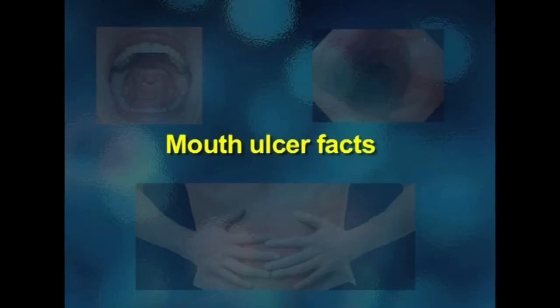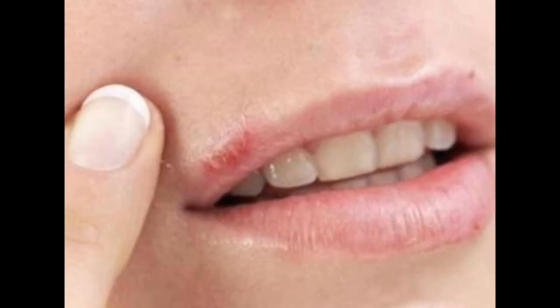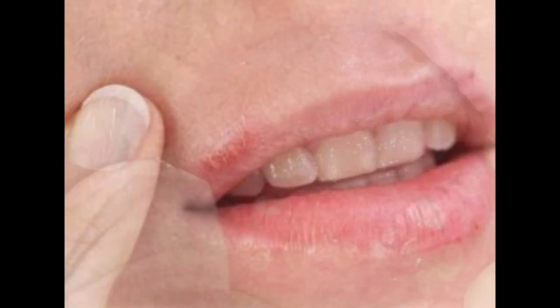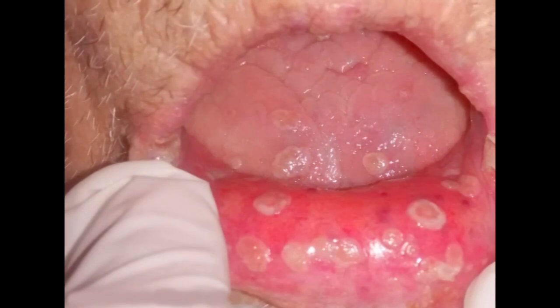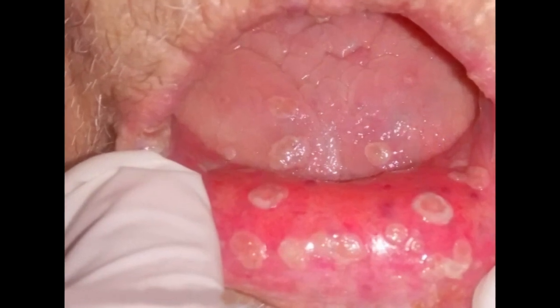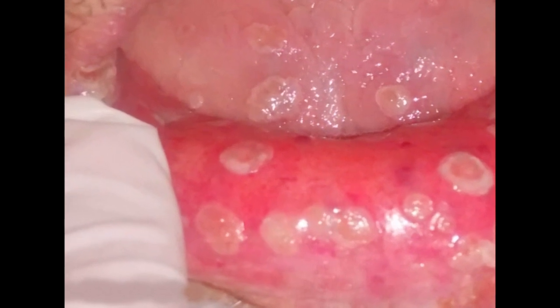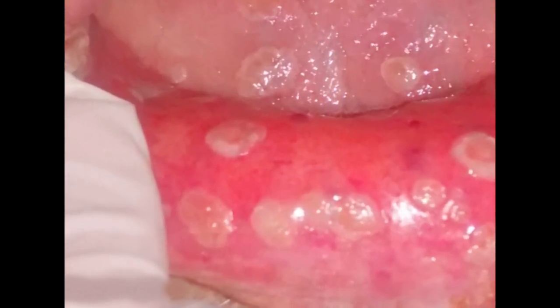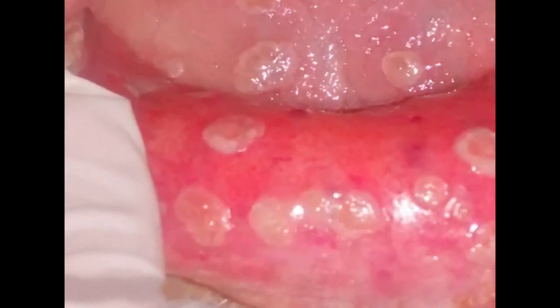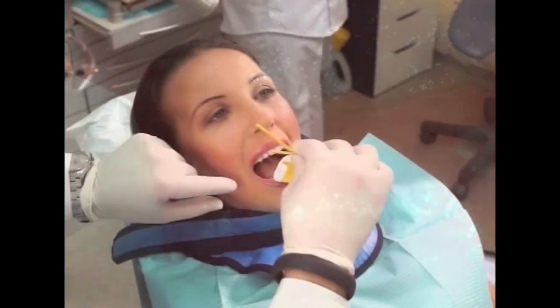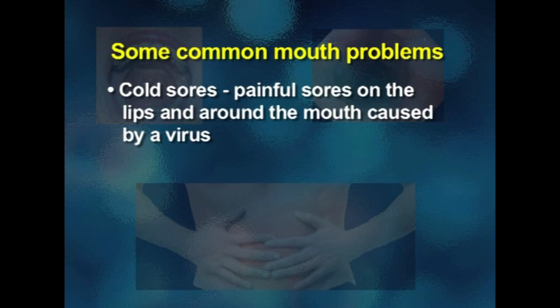Mouth ulcers are very common and can be painful, annoying, and sometimes embarrassing. They are red breaks in the lining of the mouth. The pain is caused by the nerves just below the surface of the lining of the mouth becoming exposed. Luckily, most mouth ulcers are easy to treat.